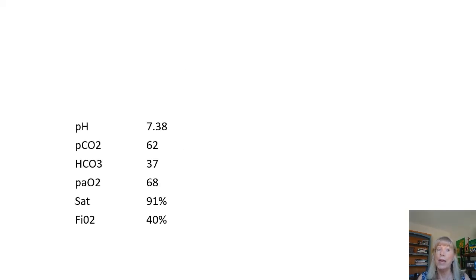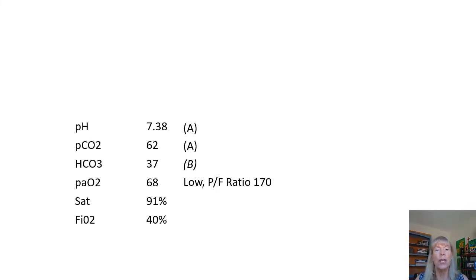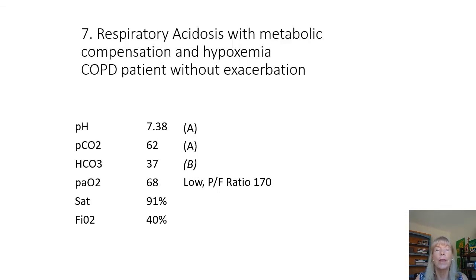Number seven: PaO2 of 68 on 40%, giving a low PF ratio of 170. CO2 is acid, bicarb is base, but the pH is in normal range — below 7.4, so we label it acid. We line up the two A's: respiratory acidosis with compensation because the pH is in normal range. This is a good example of a COPD patient without exacerbation who maybe lives with oxygen.